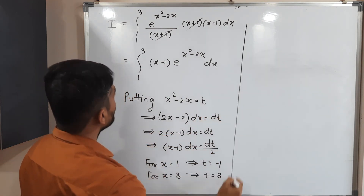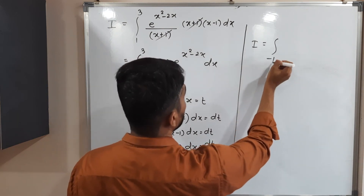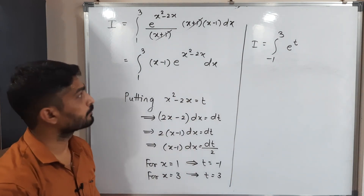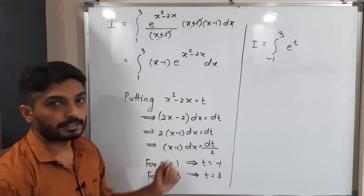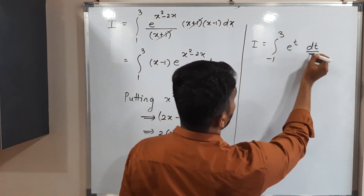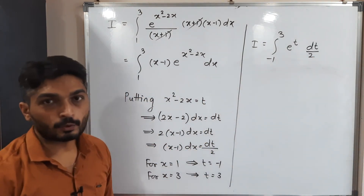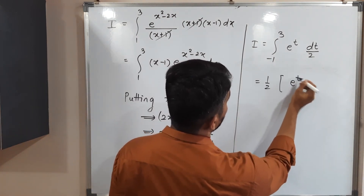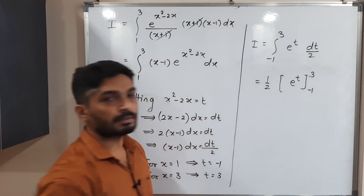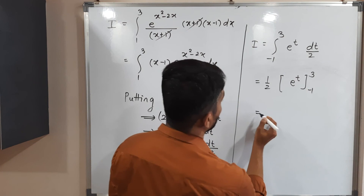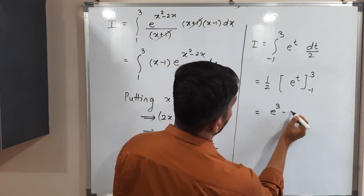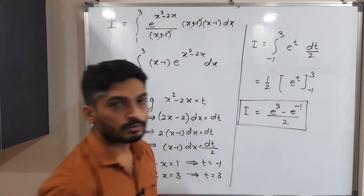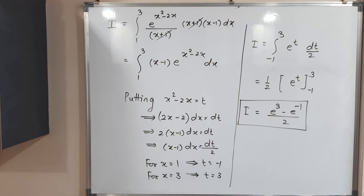So I equals integration from minus 1 to 3 of e raised to t, times dt over 2. Taking the constant one-half outside: I equals one-half times the integral of e raised to t, which equals one-half times e raised to t, evaluated from minus 1 to 3. This gives I equals one-half times (e raised to 3 minus e raised to minus 1). So the example is complete.